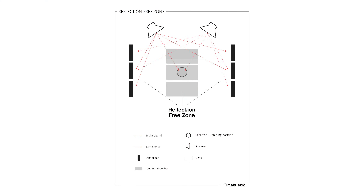You can do basic acoustic planning without complex calculations. Just imagine that flat surfaces are mirrors and sound is light. So angled walls and ceiling as well as various materials help to prevent or deflect reflections, so the listening position becomes a reflection-free zone, short RFZ.